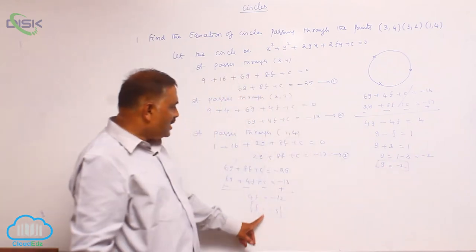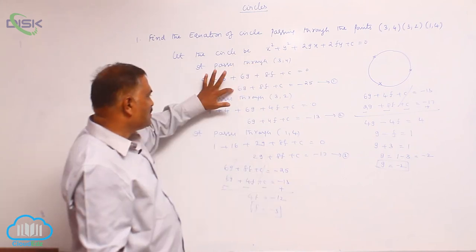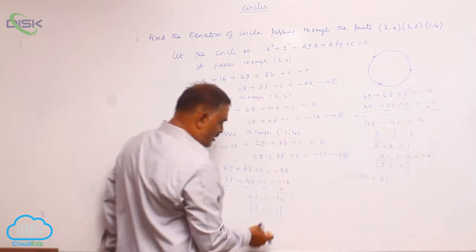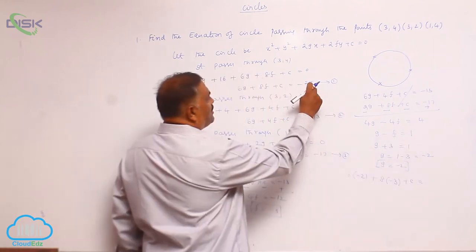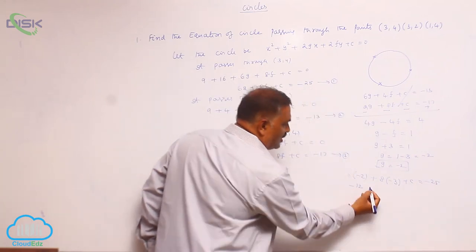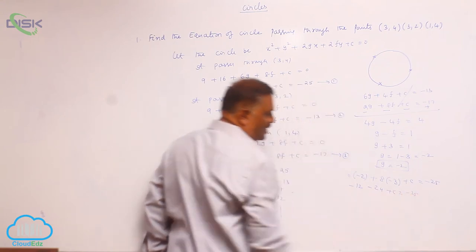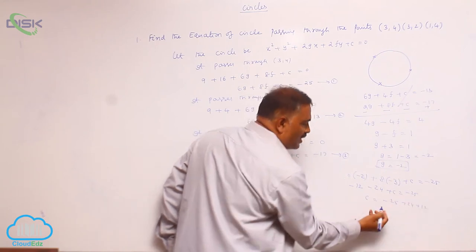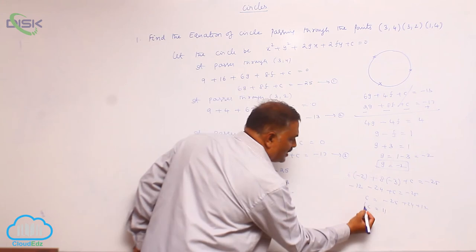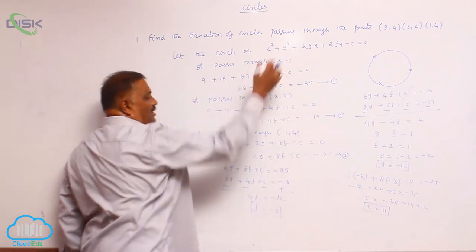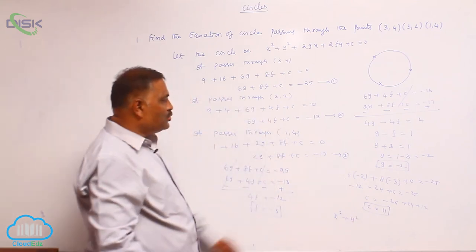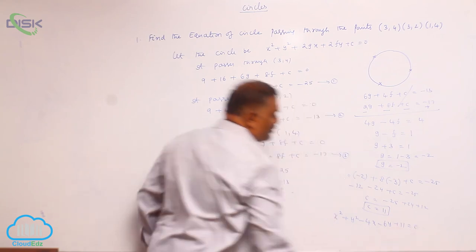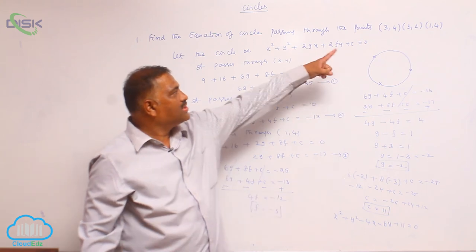Now substitute the values of f and g into equation 1 to find c: 6(−2) + 8(−3) + c = −25, so −12 − 24 + c = −25, giving c = −25 + 24 + 12 = 11. We now have all three values. Substituting into the general equation: x² + y² − 4x − 6y + 11 = 0. This is the equation of the circle passing through the three given points.